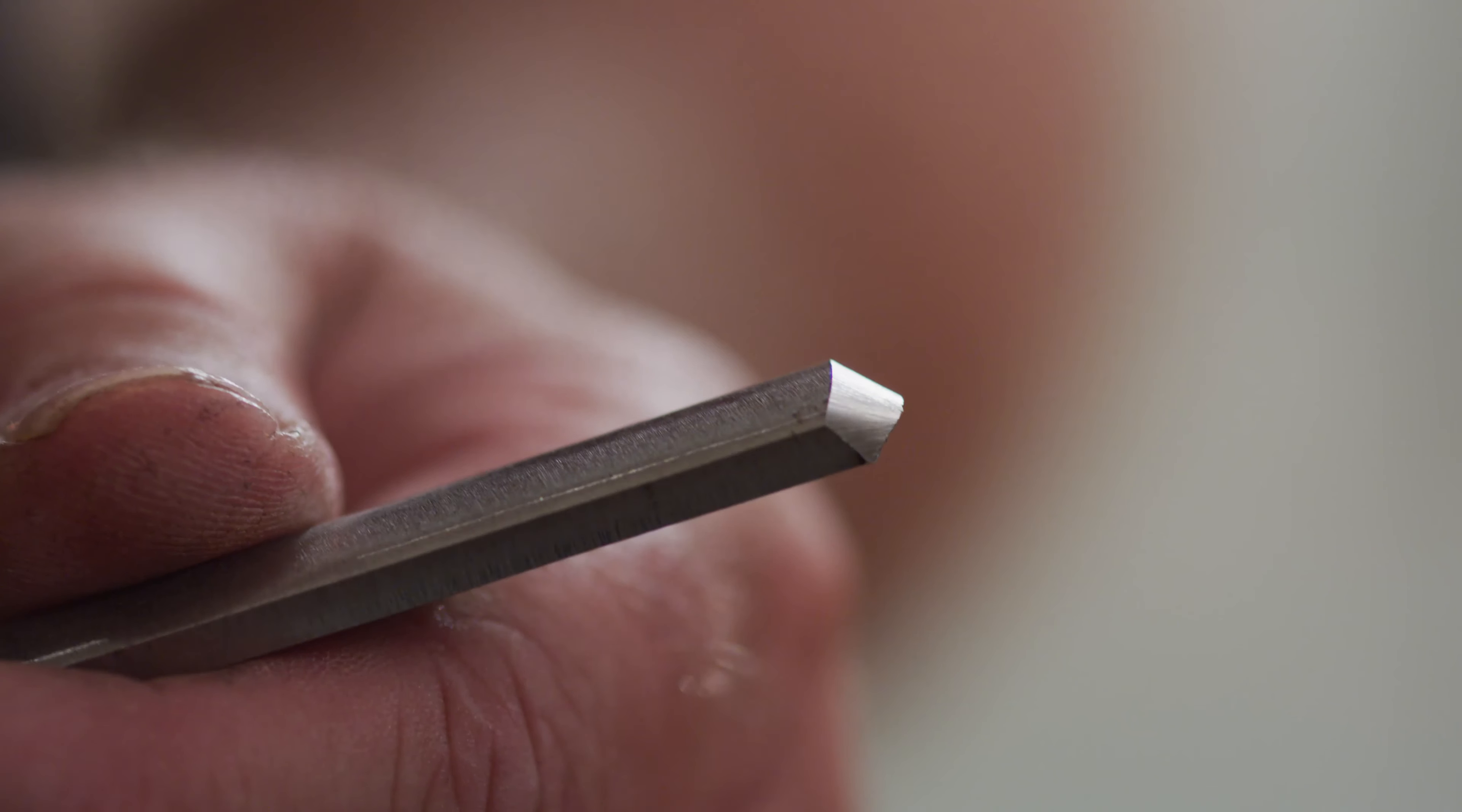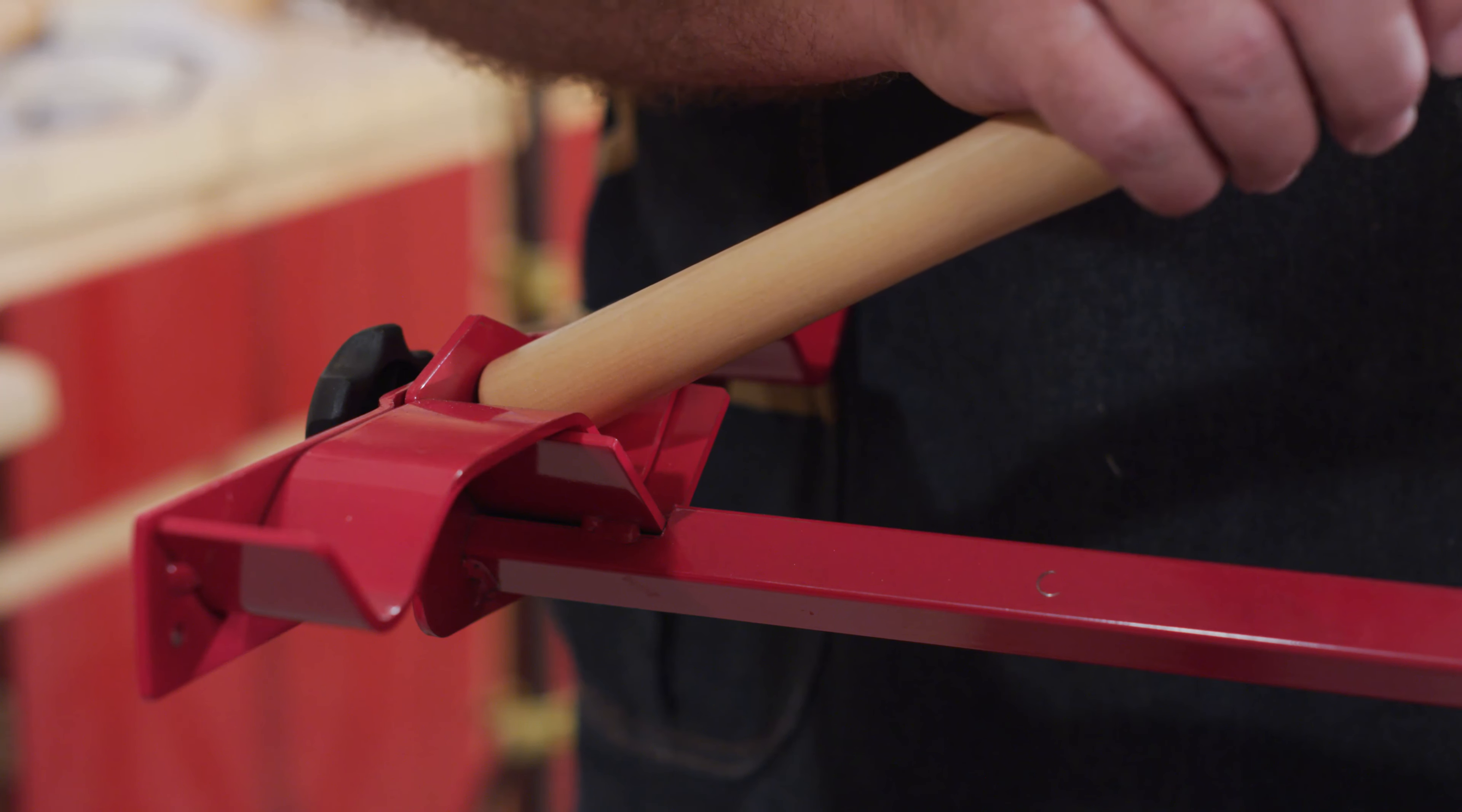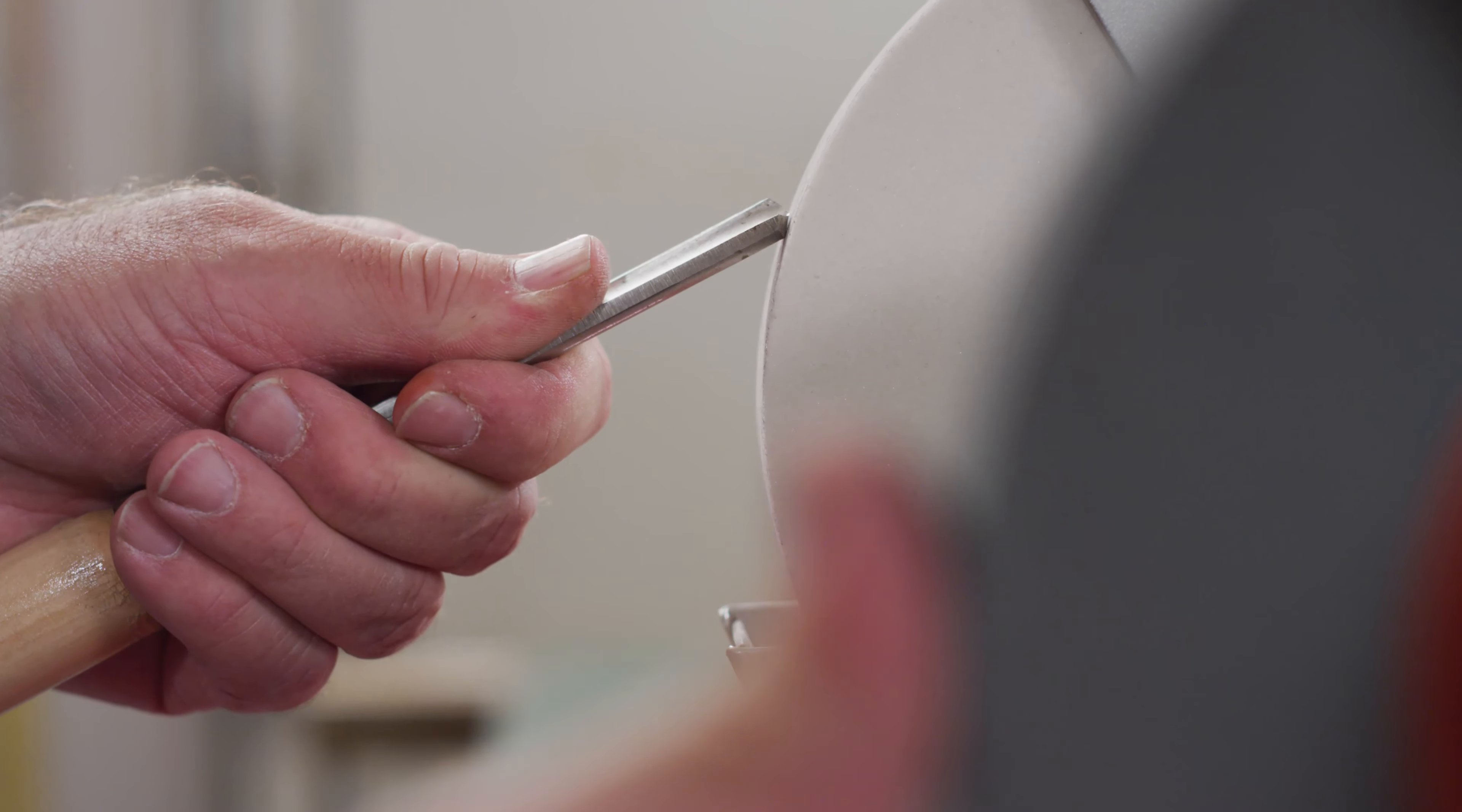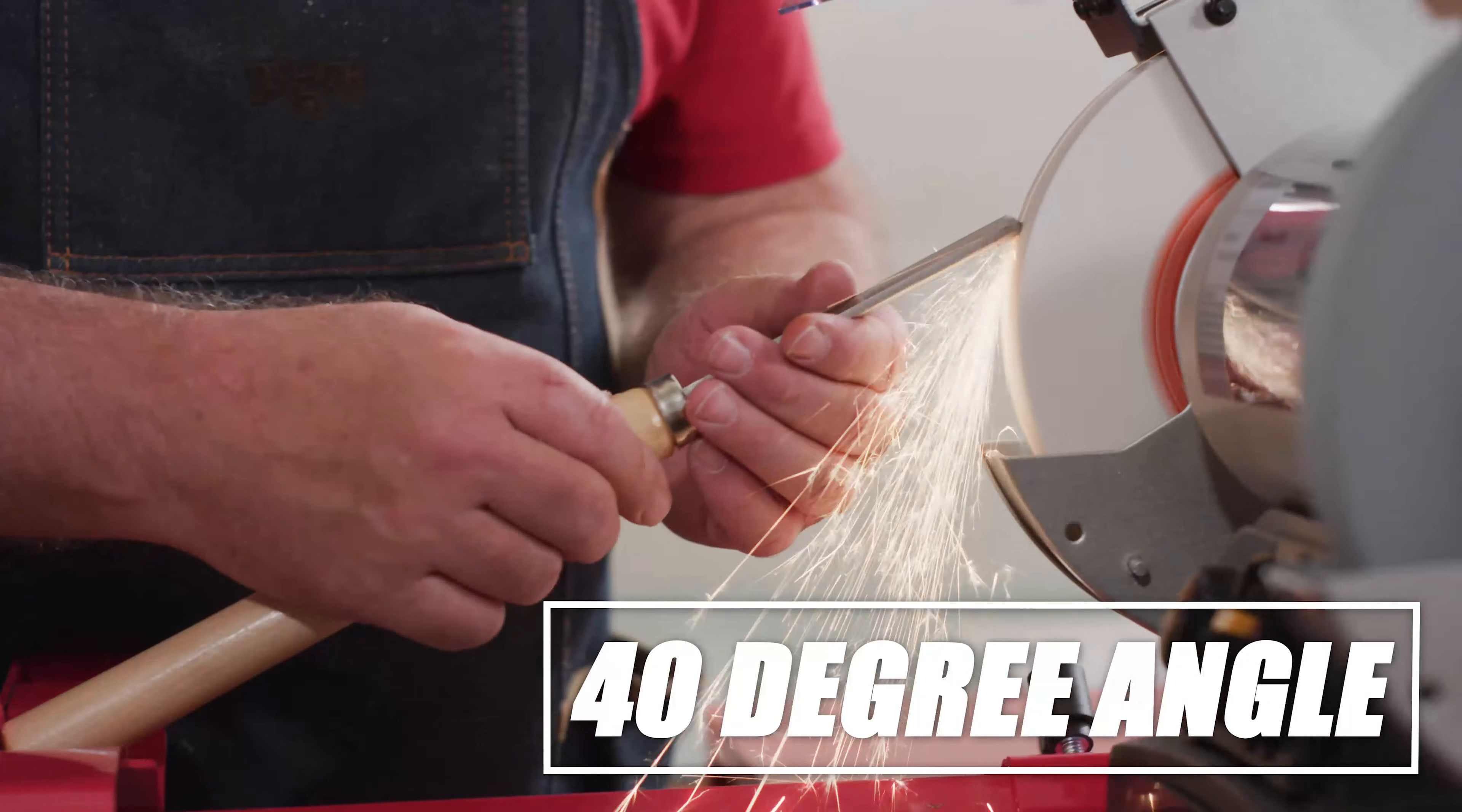To sharpen a spindle roughing gouge, position the handle in the center V pocket. Adjust the length of the arm so the angled cutting edge of the gouge rides flush against the grinding wheel. A 40 degree angle on the gouge is a typical grind.